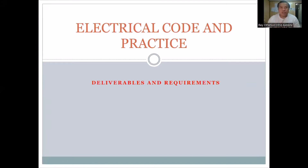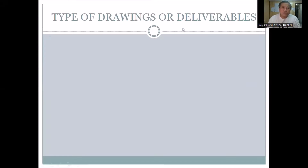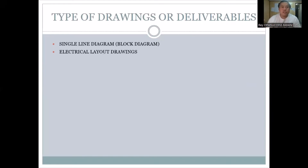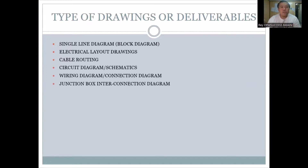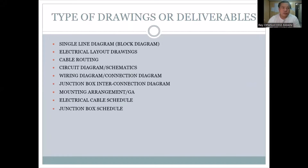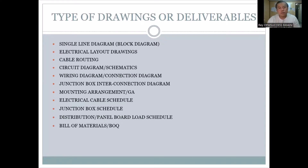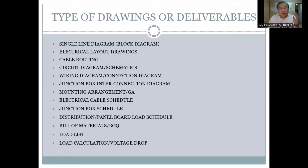Electrical good and practice — deliverables, types of drawing deliverables: single line diagram, electrical layout and cable routing, circuit diagram, wiring diagram, junction box, mounting arrangement, general arrangement, electrical cable schedule, junction box schedule, distribution panel, bill of materials, BOQ — those are the same — load list, and load calculation.